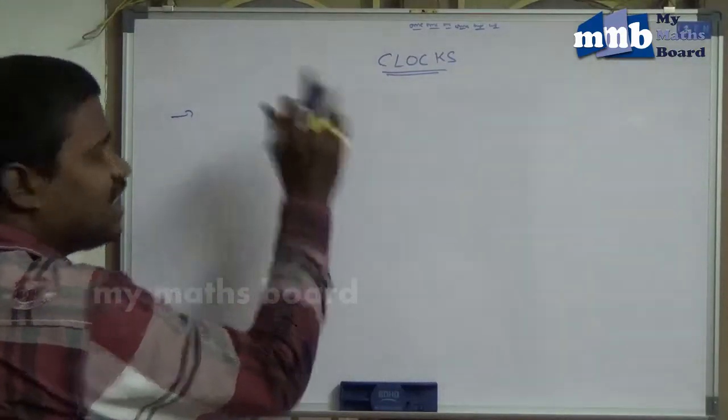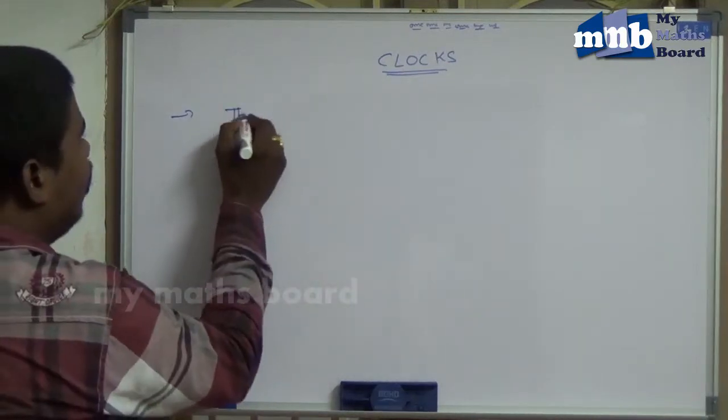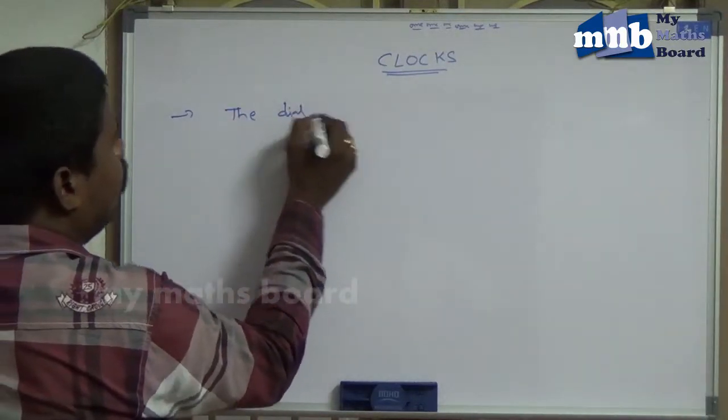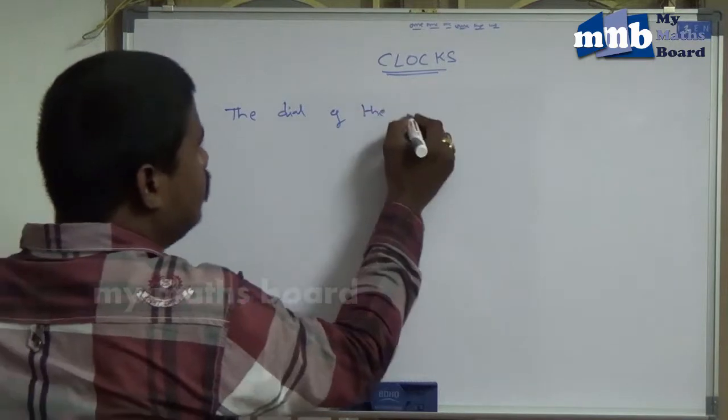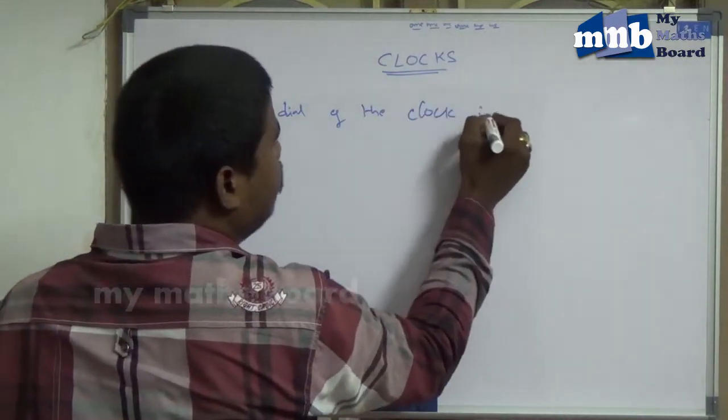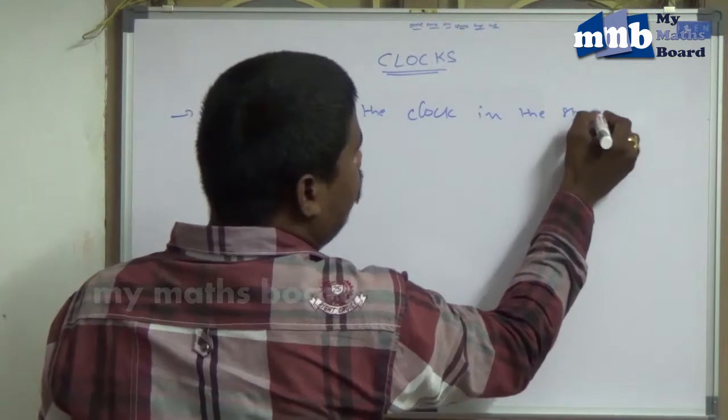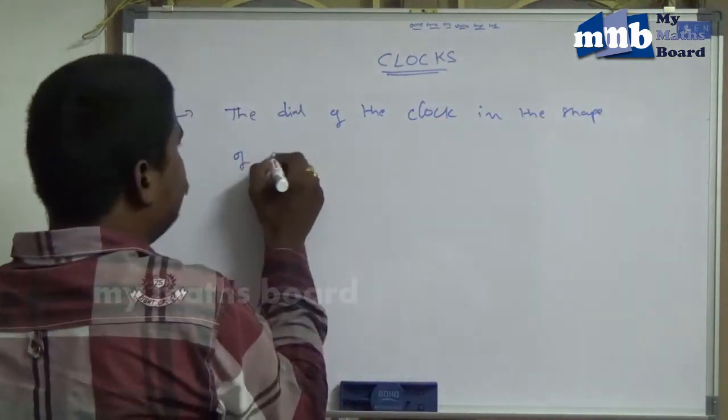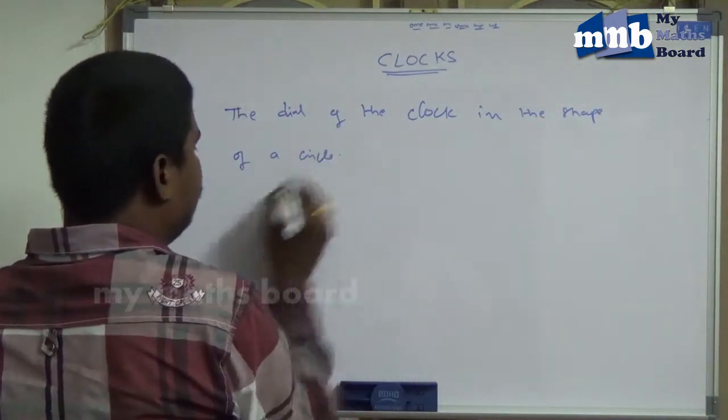So, the first one is: what are clocks? The dial of the clock is in the shape of a circle.